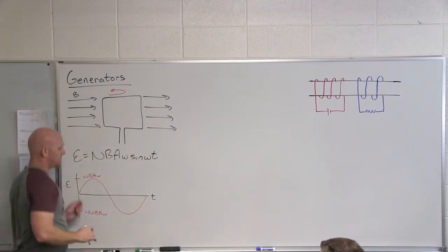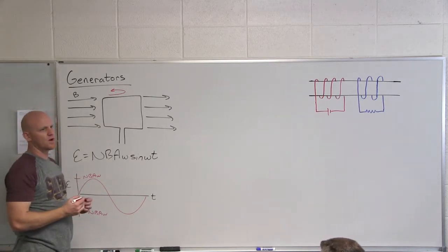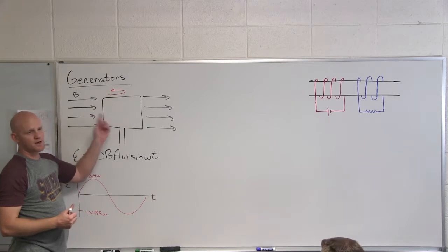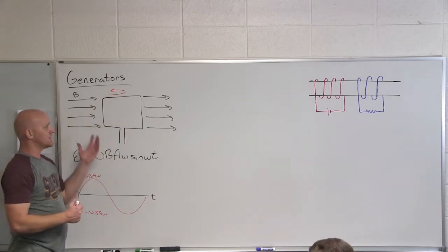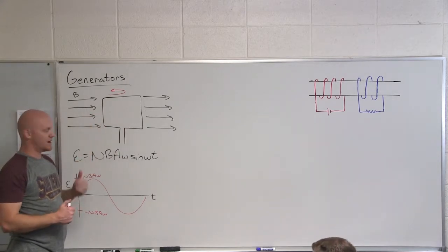Those would be the maximums and it would just alternate back and forth. And this is what we call alternating current. It's simply a product of rotating loop in a magnetic field, so Lenz's law predicts that the current would alternate every 180 degrees.